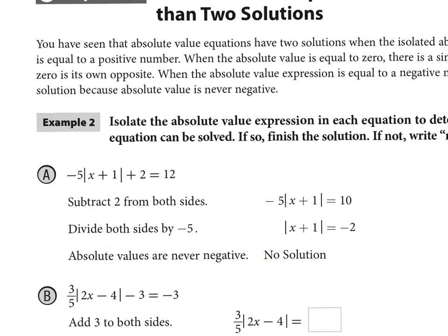Why would there be no solution? Think about absolute value — you put something in the absolute value function and it always comes out positive. But this is saying that when it comes out, it's going to equal something negative. Can absolute value ever equal a negative number? No — because absolute value will always equal something that is positive. So that is why there's no solution: absolute values are never negative.